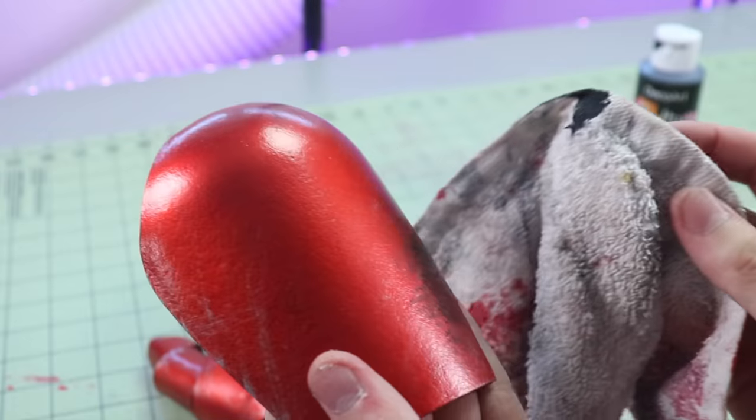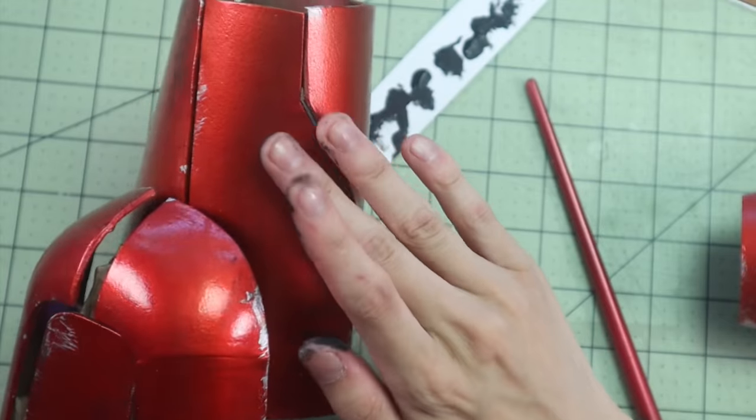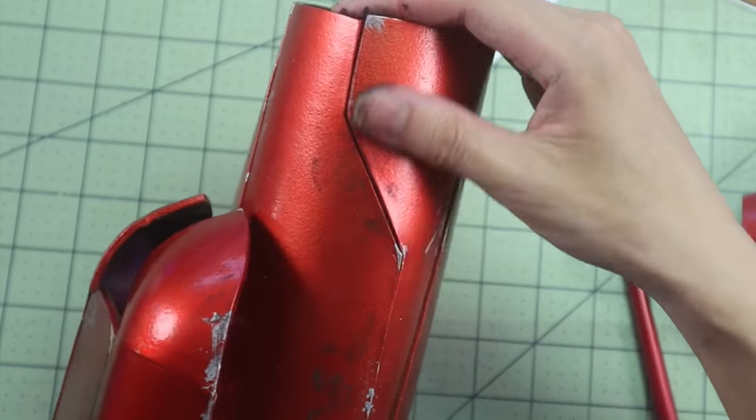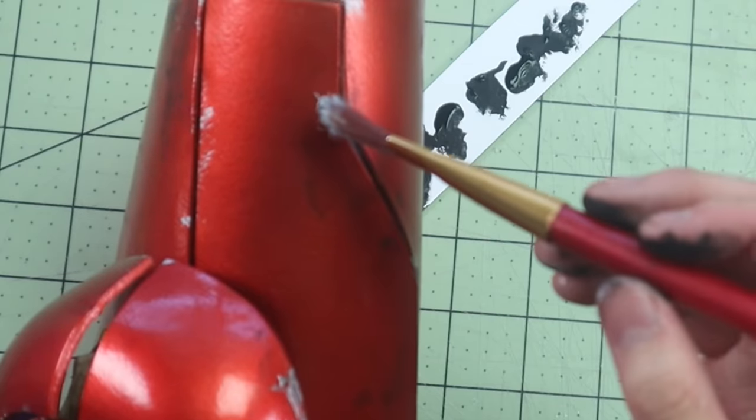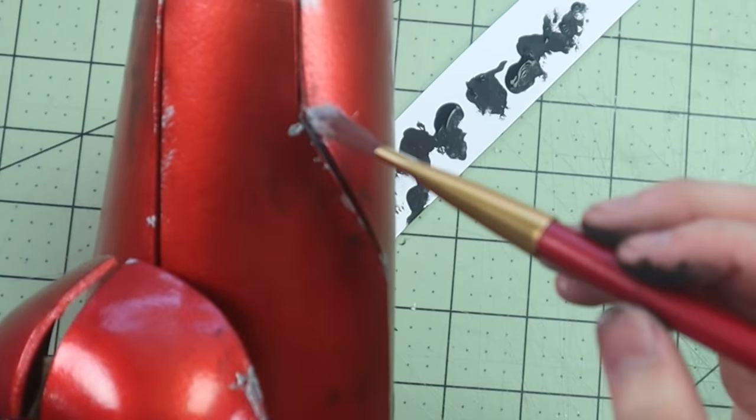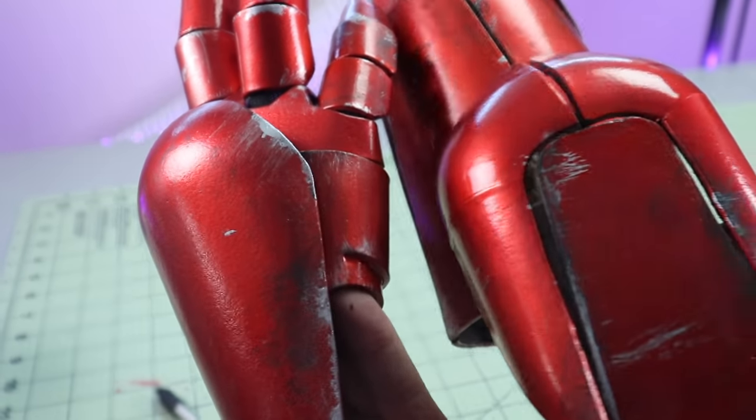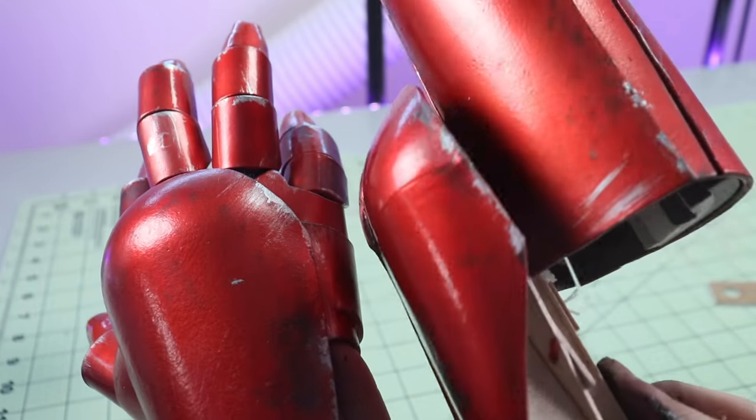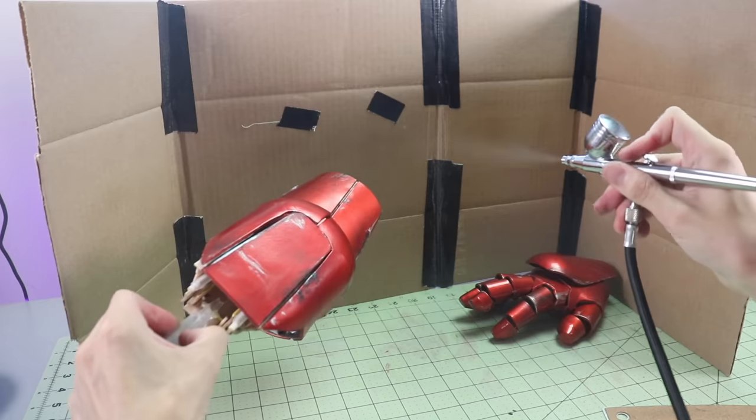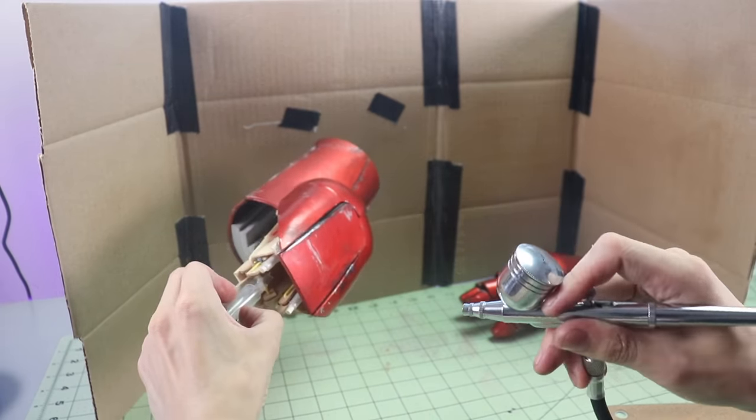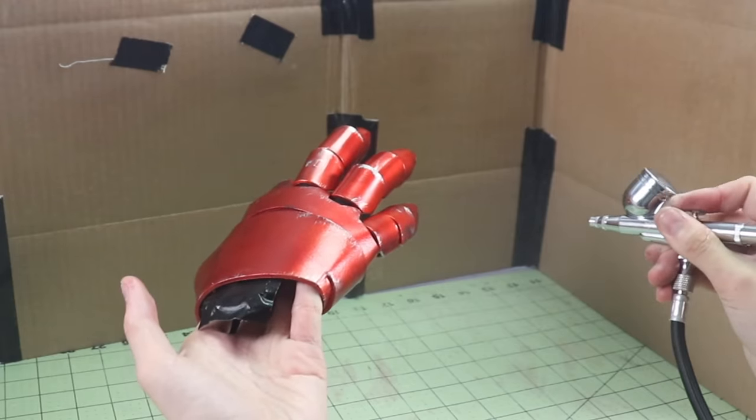To top it all off, I am going to do some simple weathering using some black and silver acrylic paint. I don't want to go too heavy here—I don't want to ruin all my hard work—I just want to kind of lightly scuff it up and make it look used and believable. Finally, one last coat of Pledge Floor Gloss to seal the black and silver acrylic paint.